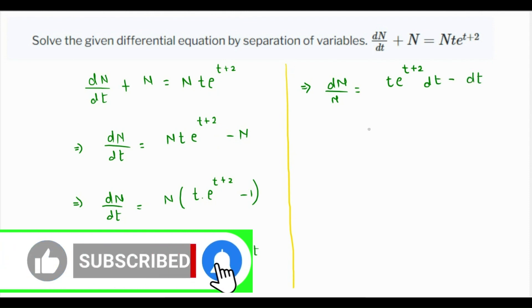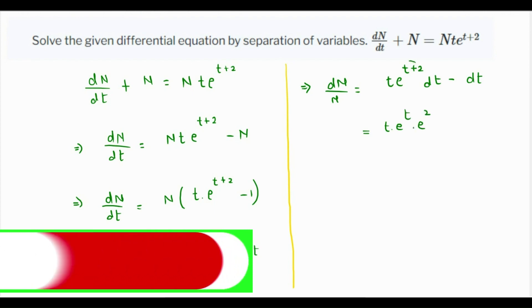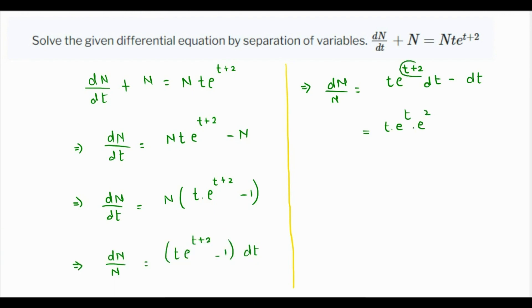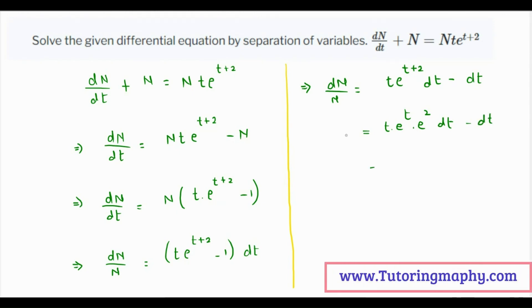This can further be written as t times e raised to t times e raised to 2, because as per the properties of exponents, e raised to a plus b can be written as e raised to a times e raised to b. So e squared comes out, and the rest of the terms remain as they are. This can now be integrated on both sides — there are three terms to be integrated.